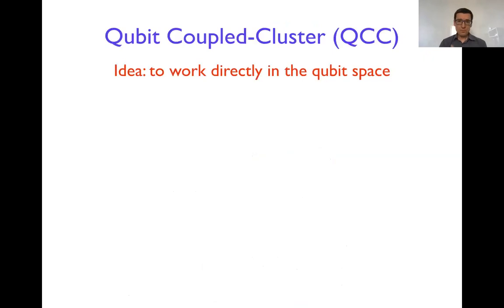But still with the unitary coupled cluster theory, the circuits usually are pretty long and hard to implement for large systems. That's why recently it was suggested maybe to start directly in the qubit space instead of going first and formulating the unitary transformation in fermionic space and then transforming them to the qubit space.